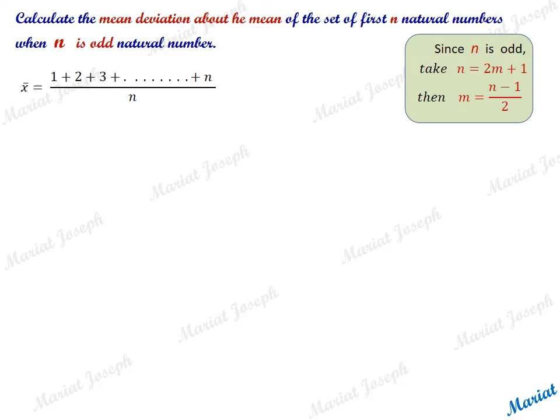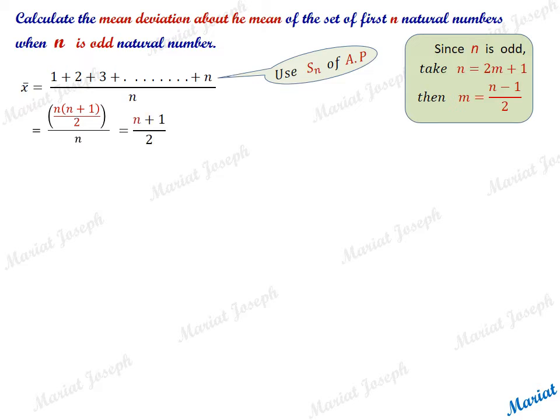First we need to calculate the arithmetic mean, which is the sum of all observations divided by the number of observations n. The numerator is an arithmetic progression whose first term is 1 and common difference is 1. Using the sum of n terms formula, we get n(n+1)/2 divided by n, which equals (n+1)/2. Substituting n as 2m+1 and simplifying, the arithmetic mean is m plus 1.